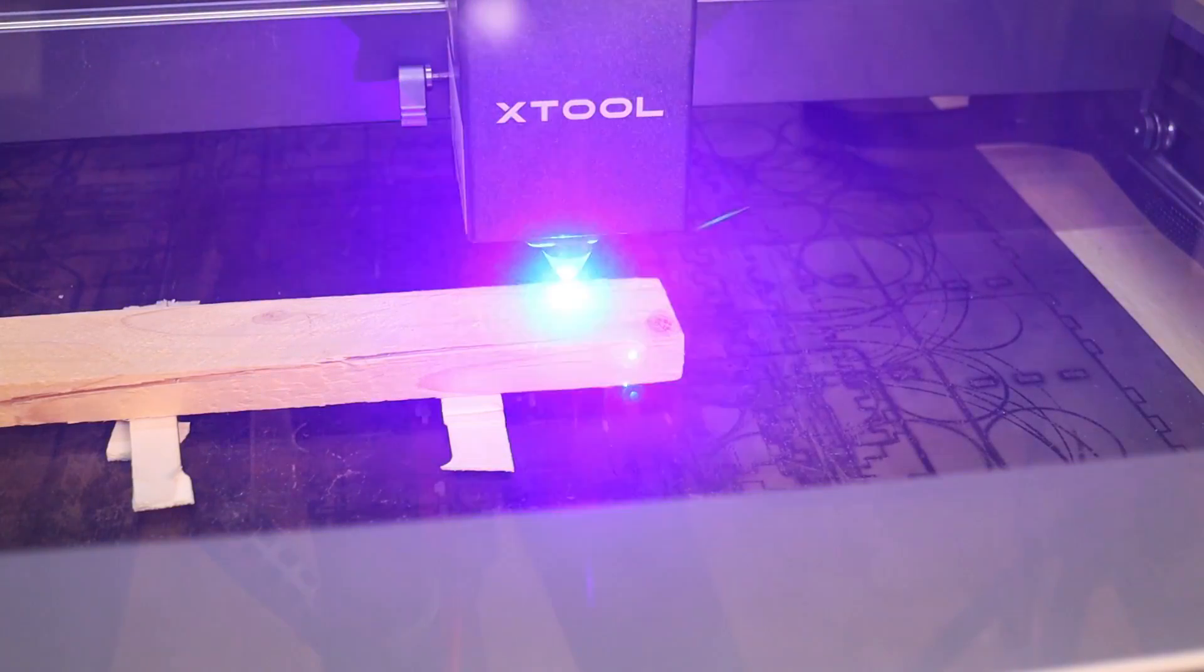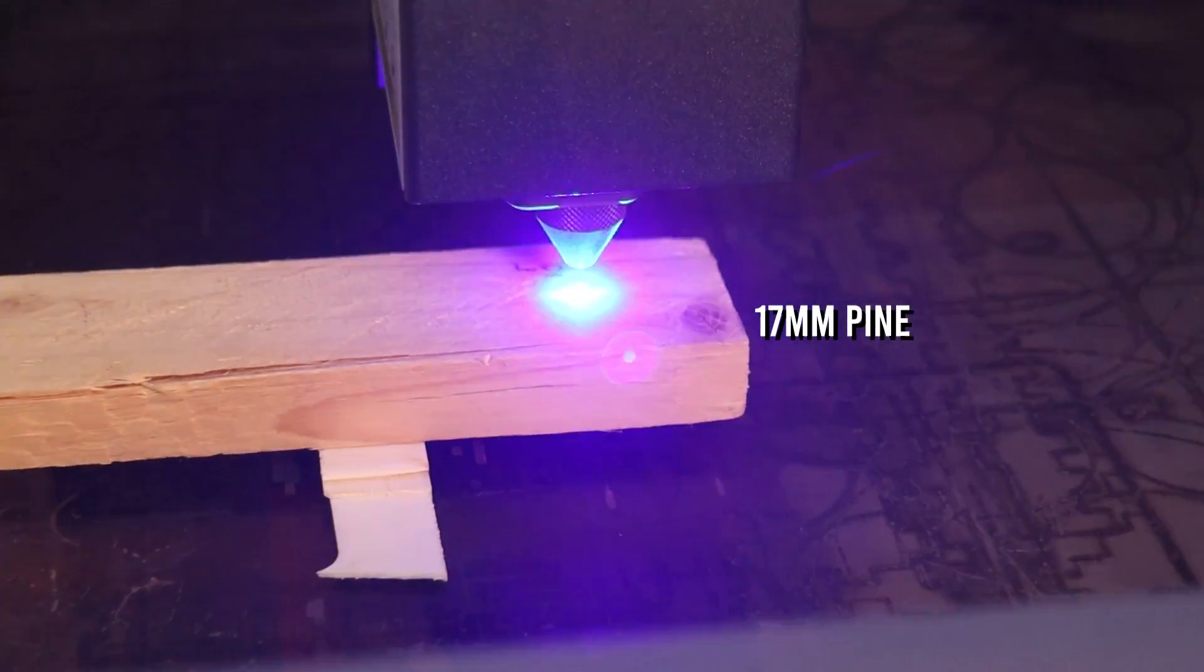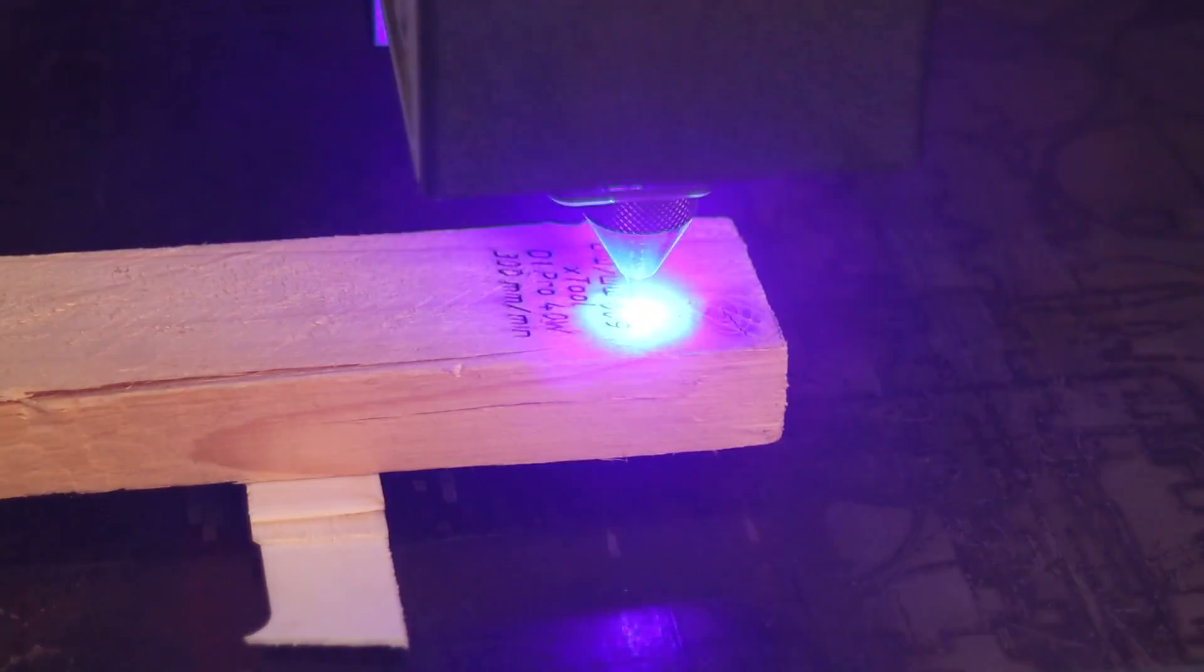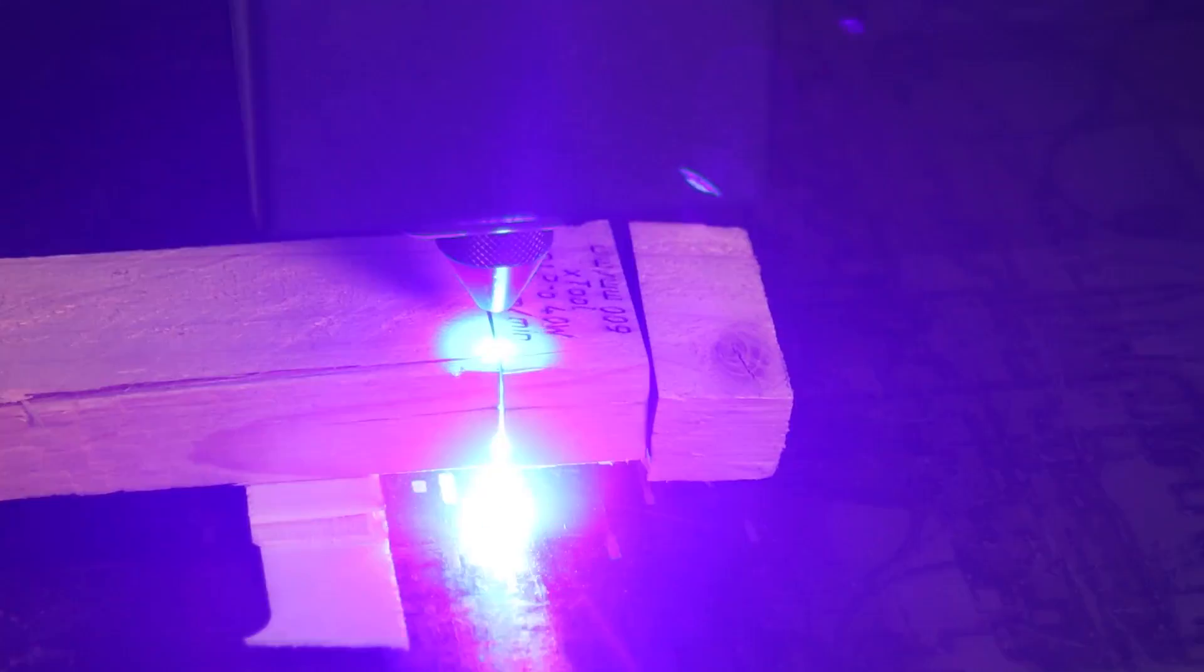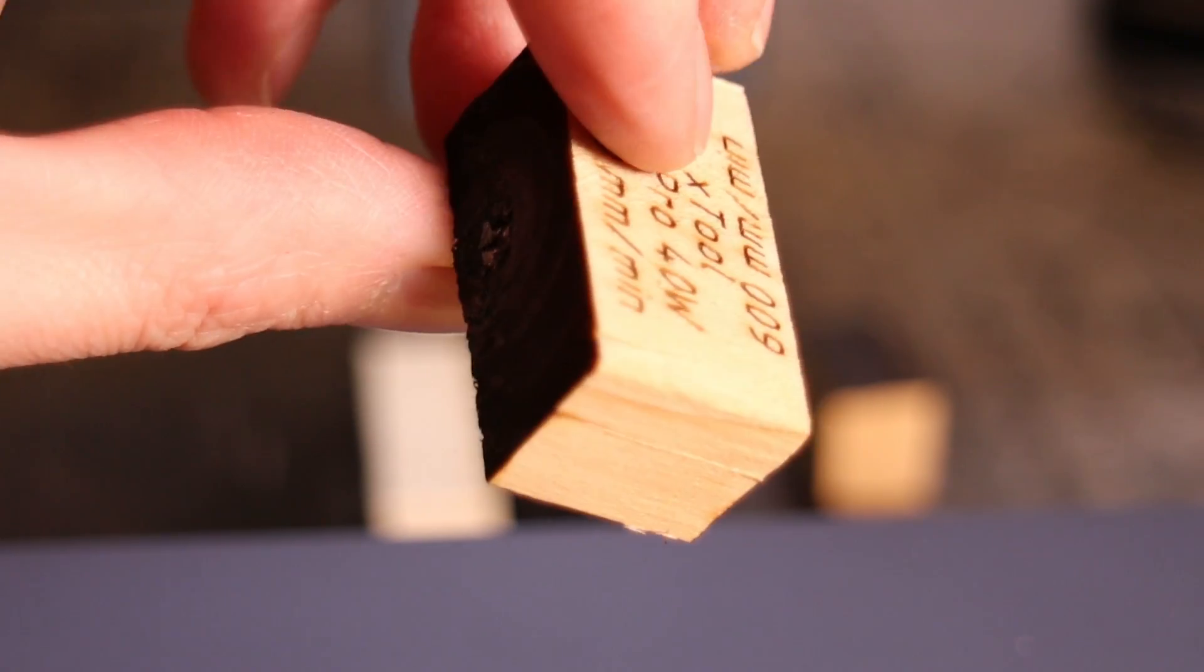Here I am cutting 17mm thick pine board. It was able to cut through in 4.5 passes at 600mm per minute and 2.5 passes at 300mm per minute. Both cuts look very clean.